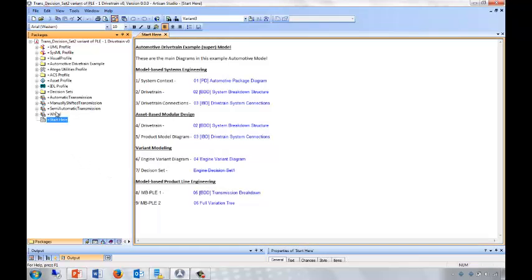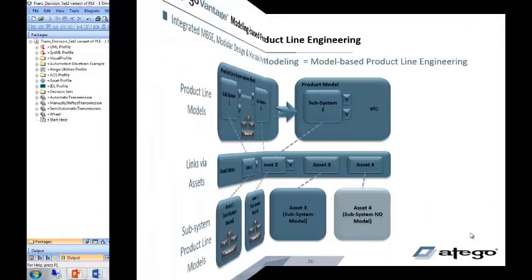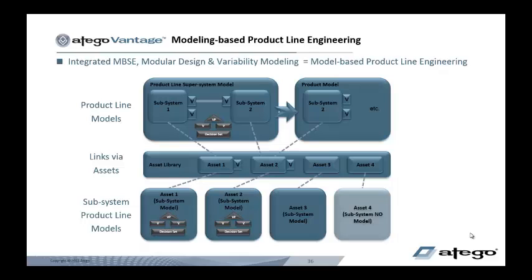We now have a resolved product model. Let's take a look at the transmission breakdown. We can see that we now have just the manually shifted transmission with five gears. So we've resolved variation points both in the local model and in the variations of the asset that we've used, pulling together model-based systems engineering, modular design with asset library, and product line modeling. So we've just seen how Otago Vantage implements model-based product line engineering — separating supersystems and subsystems using Otago Asset Library, publishing not only the interfaces but also the variation points, so we can build systems of systems which are variable. We've also seen how supersystems become configurations of versioned and variable subsystems.